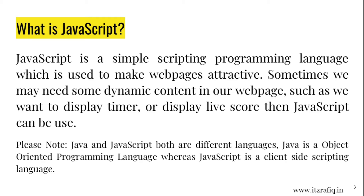Sometimes we may need some dynamic content in our web page, such as displaying a timer or displaying live scores — then JavaScript can be used. Don't be confused that JavaScript and Java are the same. Java is an object-oriented programming language, while JavaScript is a scripting language mainly used for developing web pages or websites.